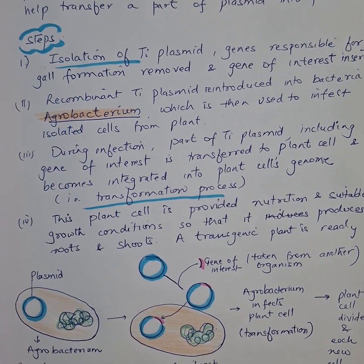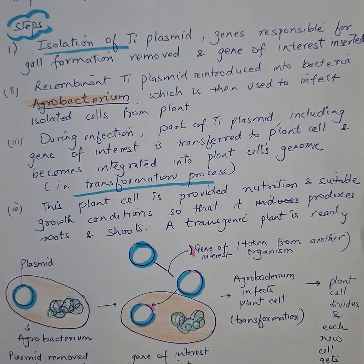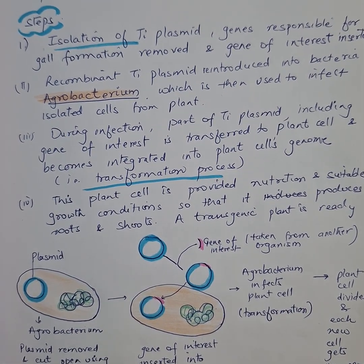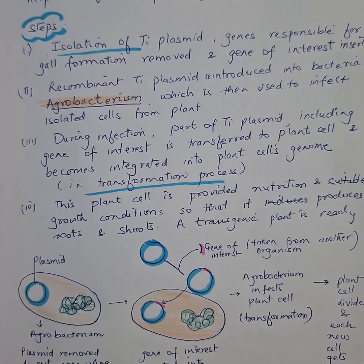This is the transformation process. Finally, the plant cell is provided nutrients and suitable growth conditions so that it produces roots and shoots. Thank you.